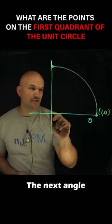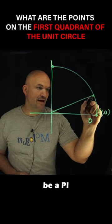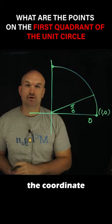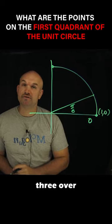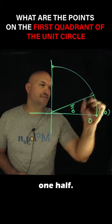The next angle is going to be π/6. That is going to have the coordinate point (√3/2, 1/2).